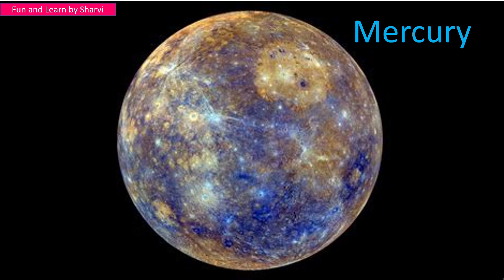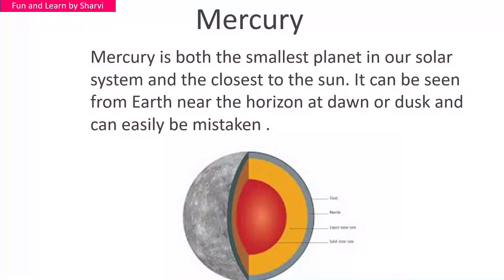This is Mercury. Here's a quick picture of Mercury. Mercury is both the smallest planet in our solar system and the closest planet to the sun.